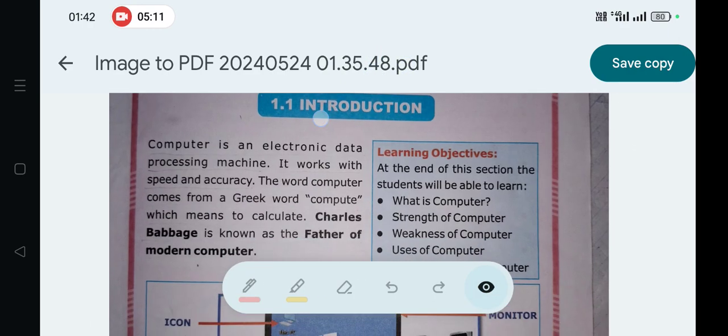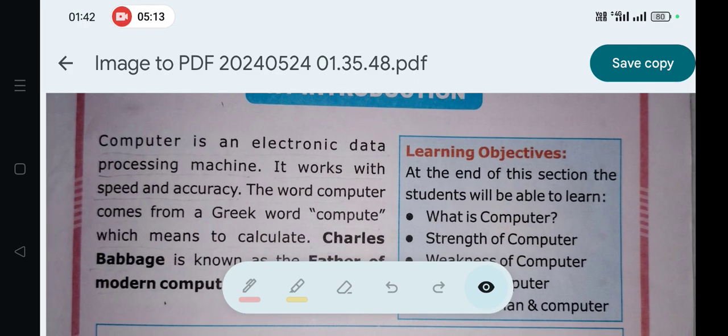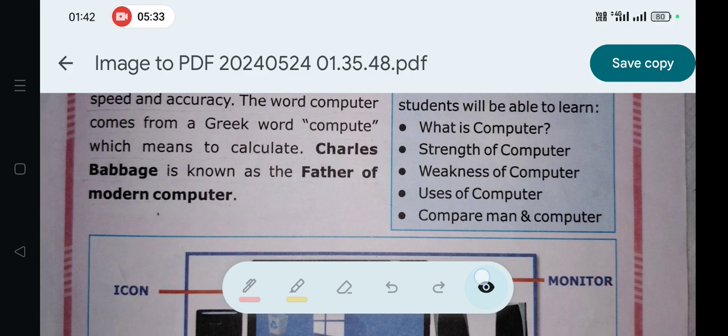Computer related, chapter first and second chapter. First sentence, total 10 sentences. Computer is an electronic data processing machine. Second point: it works with speed and accuracy. Third point is storage.